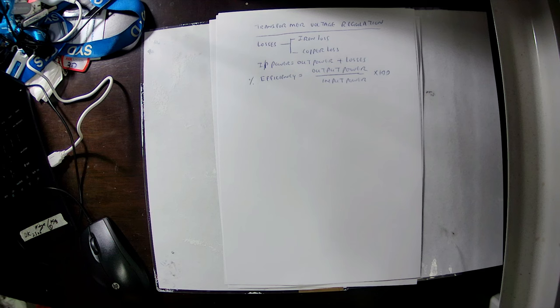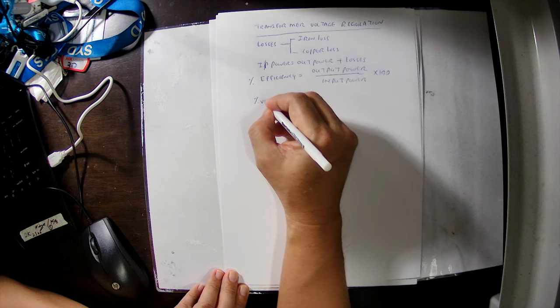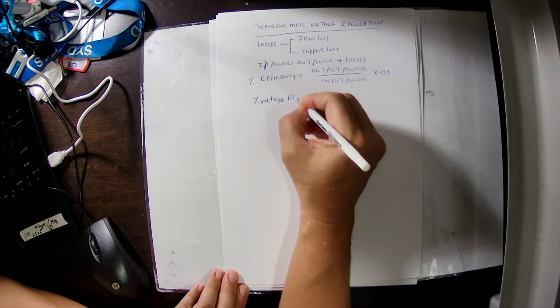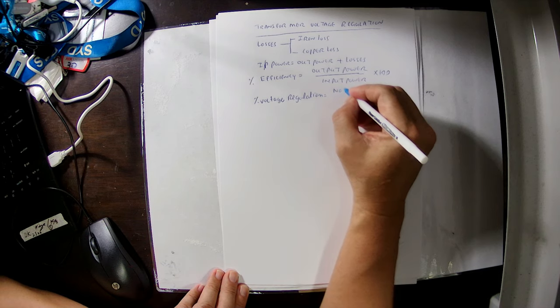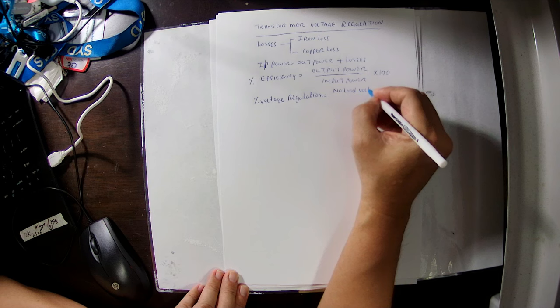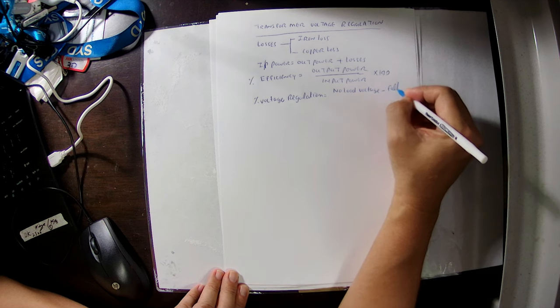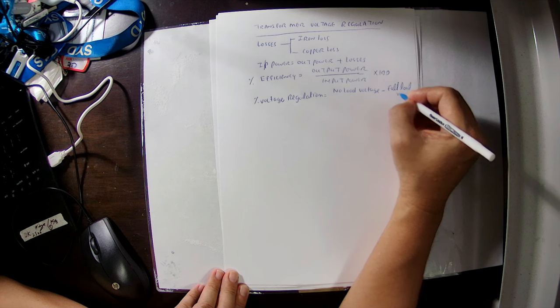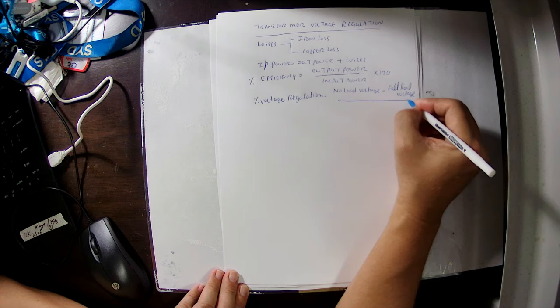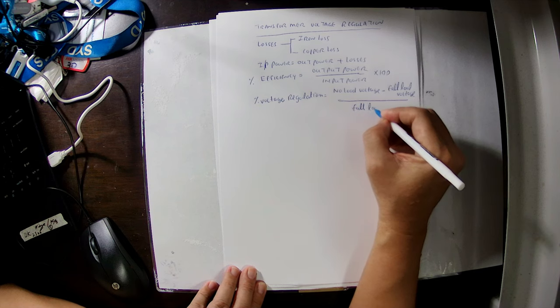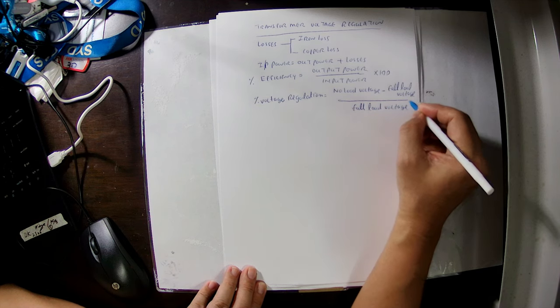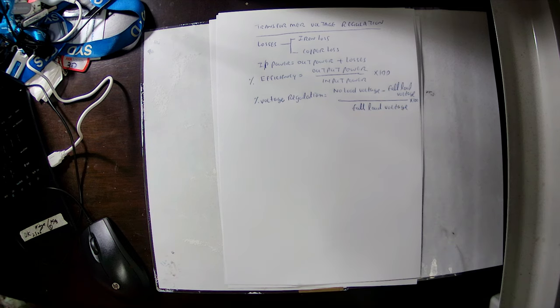We can also calculate transformer voltage regulation. The equation is: no-load voltage minus full-load voltage, divided by full-load voltage, multiplied by 100. This is the equation to calculate transformer efficiency and voltage regulation.